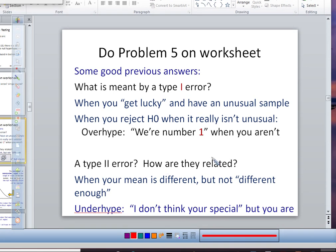And then type 2 error, how are they related? So type 2 error is when your mean is different, but not different enough. So your mean really is different. Like, you really do have a higher rate of baby girl births, but it's not enough to prove it. You don't have enough evidence to prove that your drug makes a difference, but your drug does make a difference. Does that make sense?